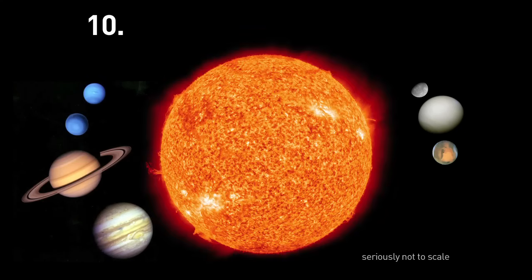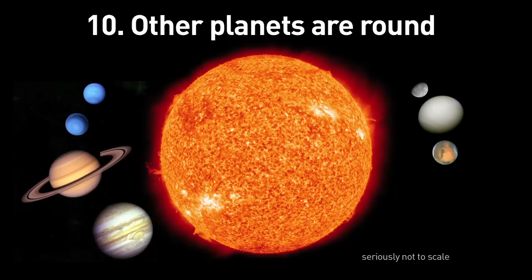10. All the other planets and stars we've ever seen are round, and there's no reason to indicate that the Earth should be any different.